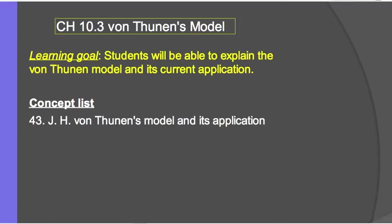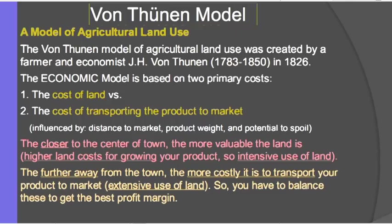Key Issue 3: the last little bit on Von Thunen's economic model. Students will be able to explain the model and its current application. So on the concept list, it is just Von Thunen's model and its application. The model is looking at agricultural land use based on Von Thunen, who lived during the late 1700s into the 1850s, and he developed this model based on economics in 1826.